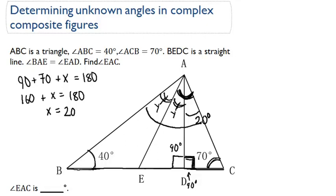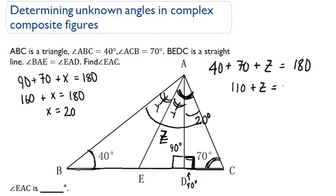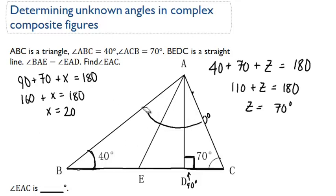Now let's find the much larger angle BAC. We'll call this angle Z. We have 40 degrees and 70 degrees, and if we add these together with Z we get 180. So 40 plus 70 plus Z equals 180. Simplifying: 110 plus Z equals 180. Subtracting 110 from both sides, Z equals 70 degrees. So angle BAC is 70 degrees, and angle DAC is 20 degrees.